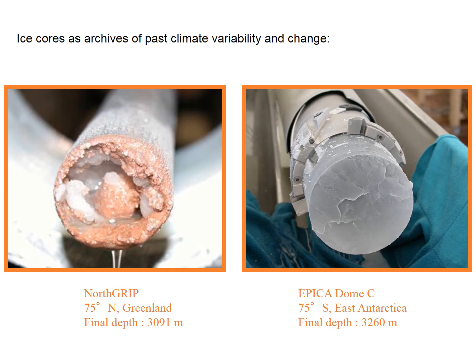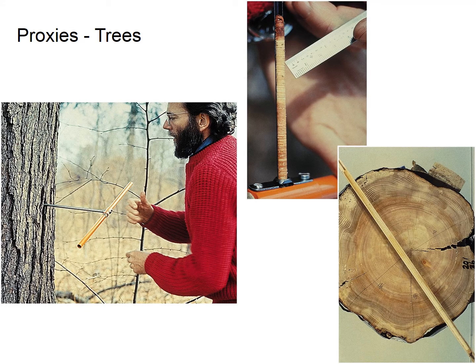These are the ice cores - big long tubes of ice you get when you drill. Similarly, you can drill into trees, though it does do quite bad things to the tree. We can get information about climate from trees because they grow with annual layers, and the thickness of those annual layers tells us something about the environmental conditions the tree grew under. A thick ring might mean it was warmer so more photosynthesis could go on, or wetter. With tree ring data it's quite hard to tell the difference between whether a big ring means a warm year or a wet year. But if you make enough measurements over a big enough area, you can build up a quite accurate proxy reconstruction of past temperature and precipitation.